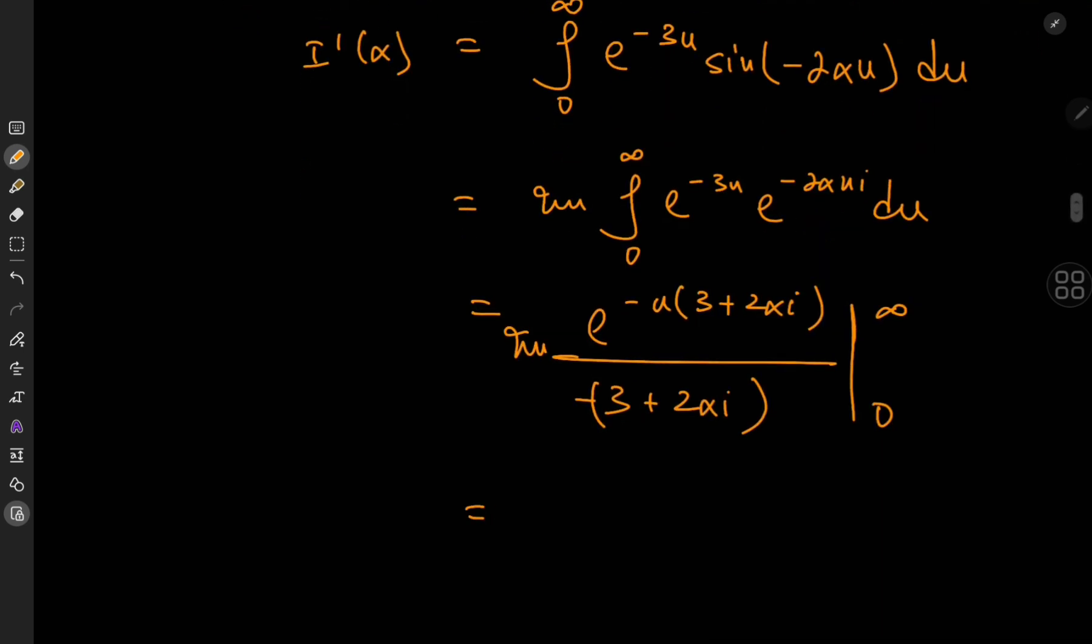And as u approaches infinity, because of this real part, this real part goes to 0 as u goes to infinity. So that collapses, we know that this thing here is bounded, the whole thing collapses to 0 and as u approaches 0 we get 1. So we have two negative signs cancelling out, so imaginary part of 1 by 3 plus 2 alpha i.